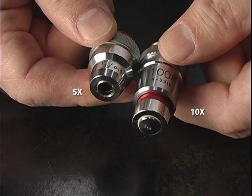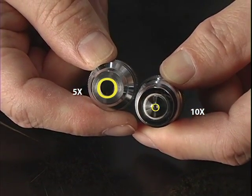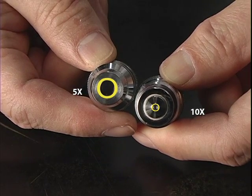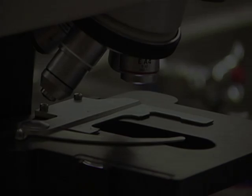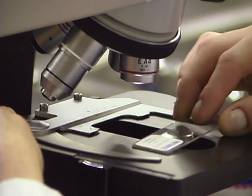Higher objective lenses have smaller diameters and so smaller fields of view. So, before changing from a lower to higher magnification, position the object that you want to see in the center of the field of view.